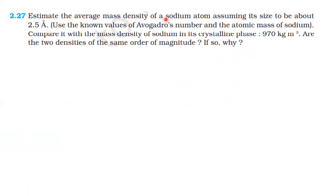Next question: Estimate the average mass density of a sodium atom, assuming its size to be about 2.5 angstrom. Use the known values of Avogadro's number and the atomic mass of sodium. Compare it with the mass density of sodium in its crystalline phase, which is 970 kg per meter cube. Are the densities of the same order of magnitude?